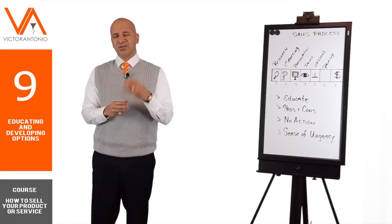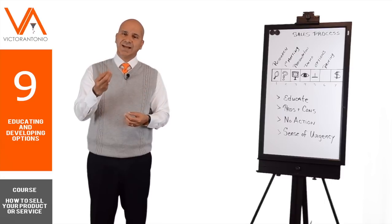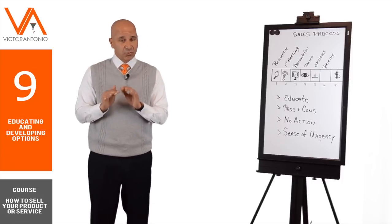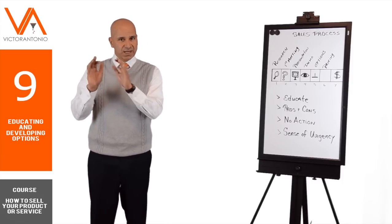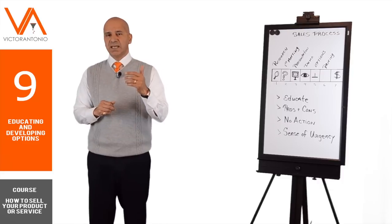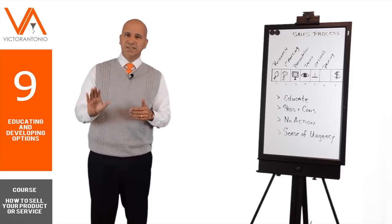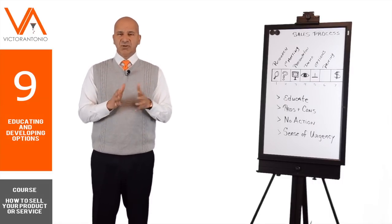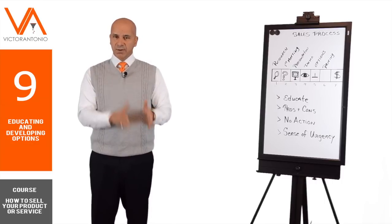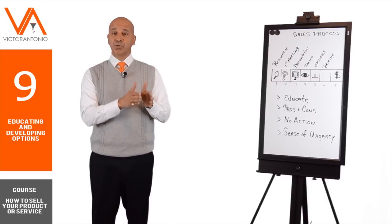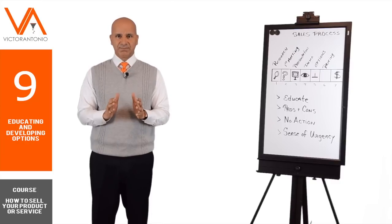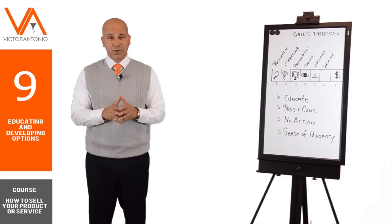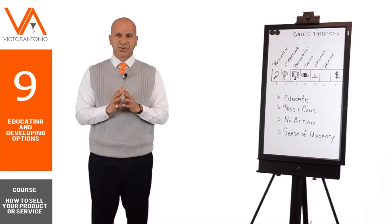Another option you might have is this right here — you can do this, this, and this. But if you don't buy this package, you may not get this feature, and you may need that, Mr. Customer. Or in this third option, which I highly recommend — there's nothing wrong with inserting your recommendation — it has this, this, this, and this, and it doesn't have too much downside because I don't think you'll need some of those features. You'll have to structure it in a way that fits your product or service. Make sure the options are limited to three, very clear-cut, with clear pros and cons per option so the customer says: I get it. Mentally, you're trying to steer them toward the option you think they should buy based on what you've heard.